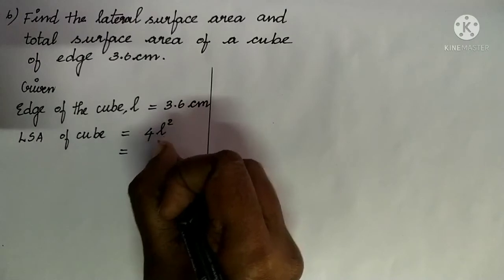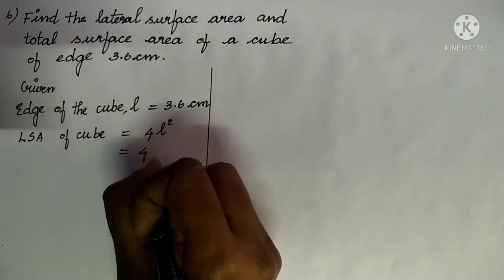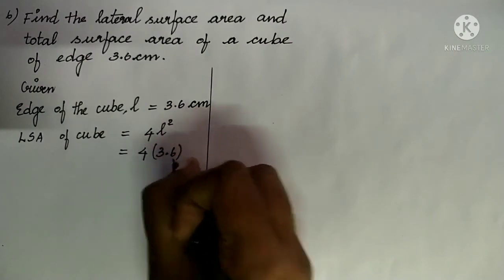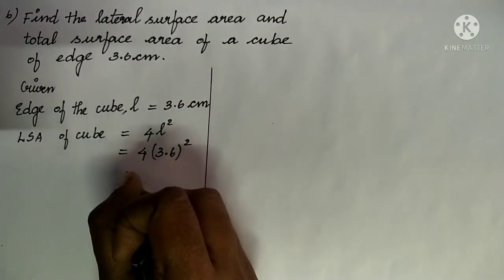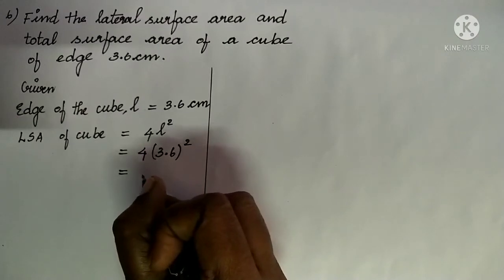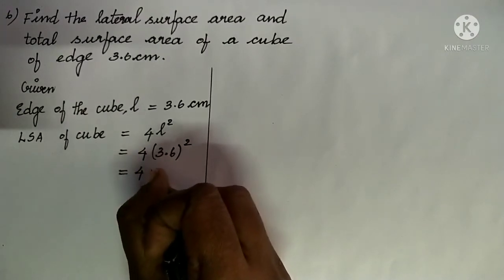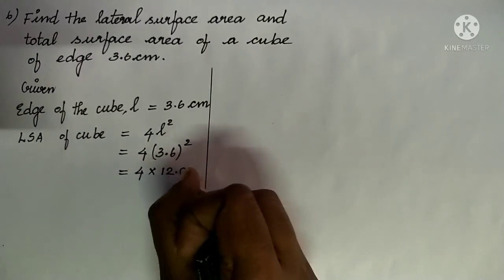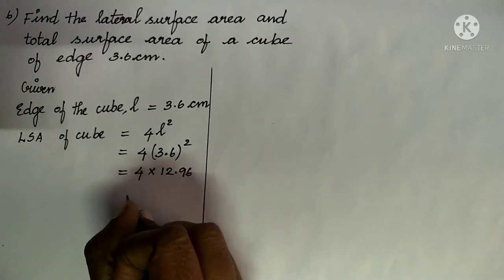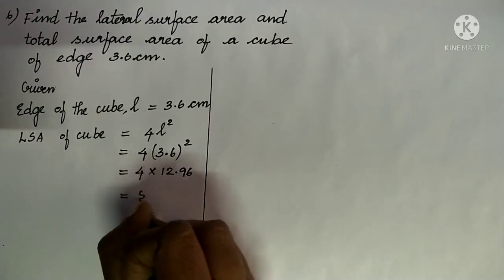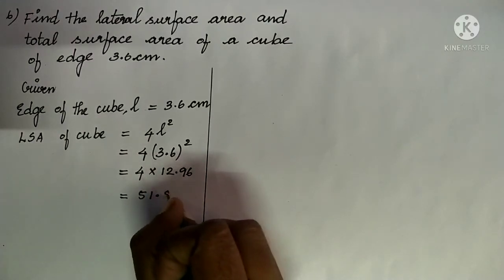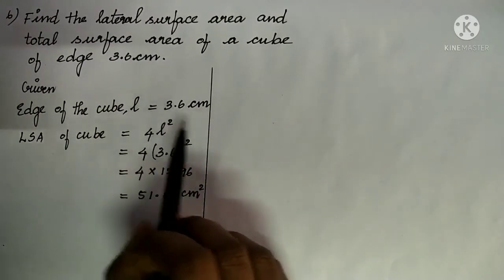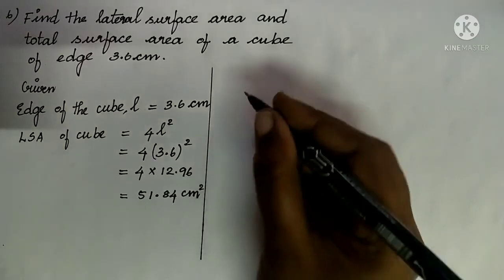We will substitute the value of L in this formula: 4 into L², where L is 3.6. So 3.6² is 3.6 into 3.6, which is 12.96. Then 4 into 12.96 is 51.84 cm², since our measure is given in centimeters.